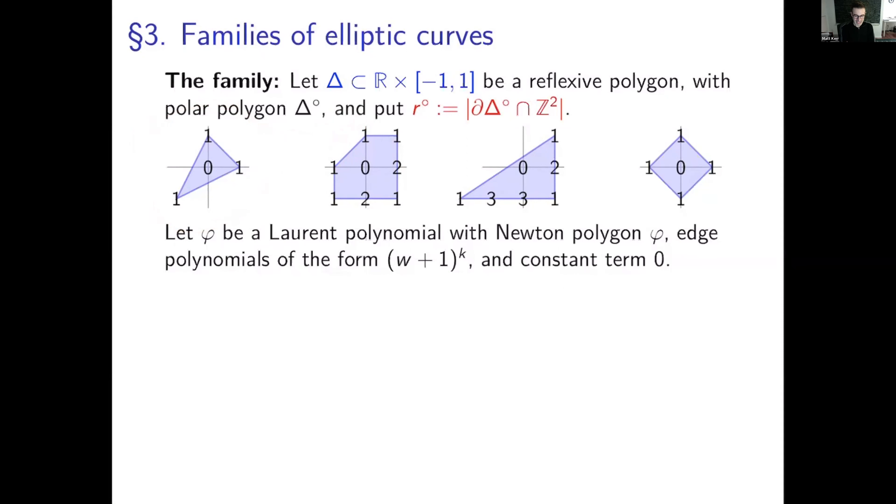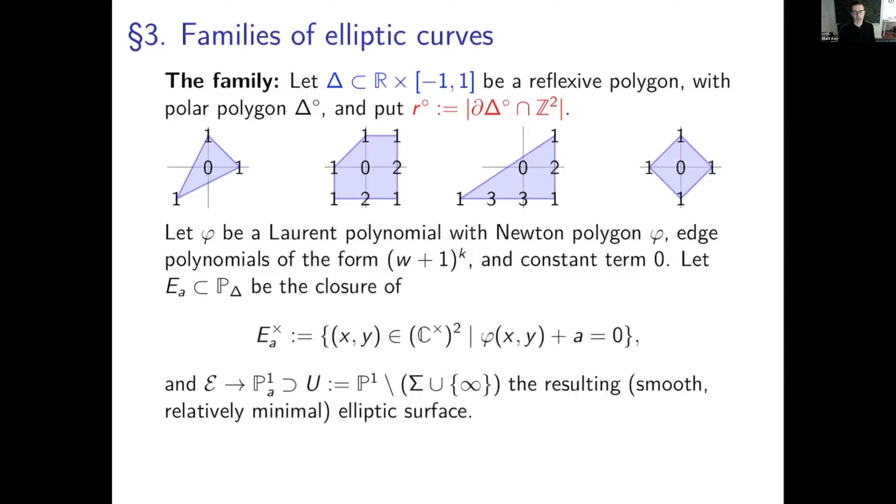Okay. Great. All right. So I'm going to choose the unique Laurent polynomial, after unimodularly normalizing the polygon that is of this form constant term zero edge polynomials as shown binomial and let EA and P Delta be the closure of EA cross, which is just the level sets of the polynomial. A is allowed to vary over P1 minus a finite set of points. And that gives, well, by curly E, I actually mean including the singular fibers. So this is going to be a smooth, relatively minimal elliptic surface.